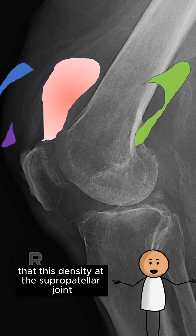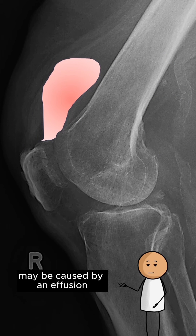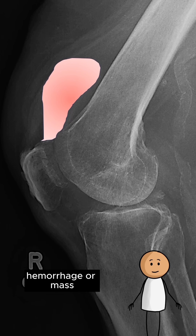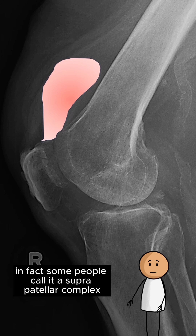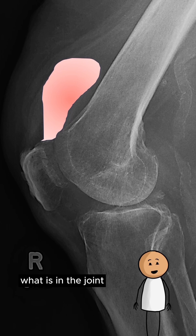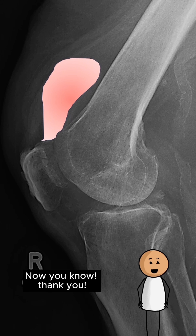Keep in mind that this density at the suprapatellar joint may be caused by an effusion, but also synovitis, hemorrhage, or mass. In fact, some people call it a suprapatellar complex instead of an effusion, as we can't tell for sure what is in the joint with a radiographic examination. Now you know.